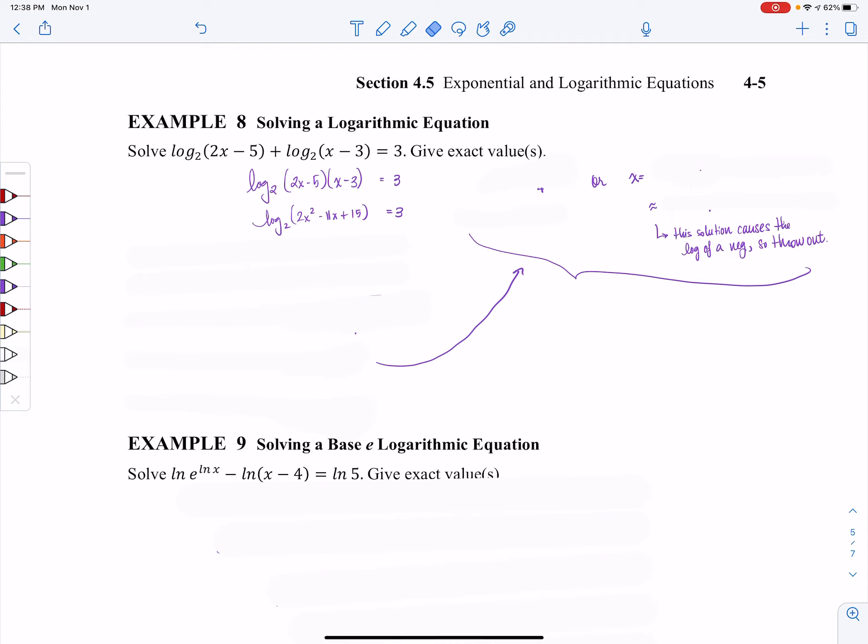So now I can use exponentials. I have a log equals something that's not a log. So I can use 2 raised to the third power is equal to my quadratic. 2 cubed equals my quadratic. Let's get 0 on one side. This is not factorable, so I'm going to have to use the quadratic formula.